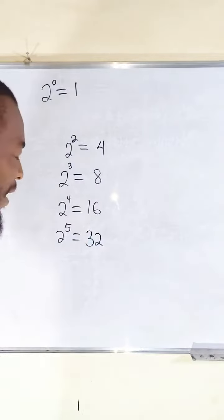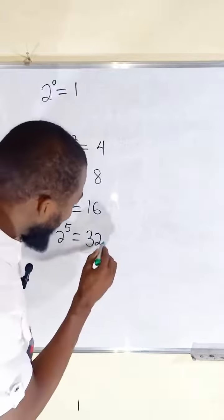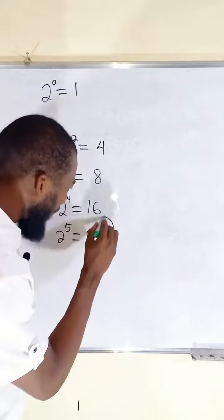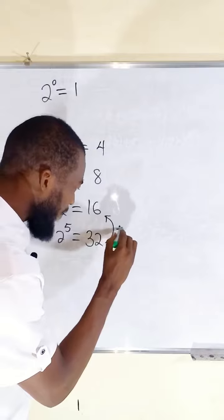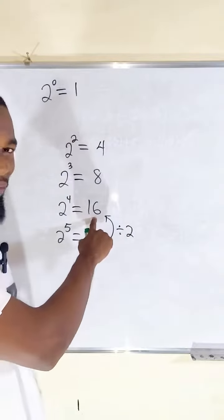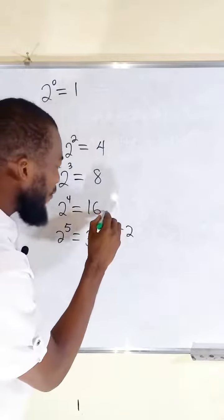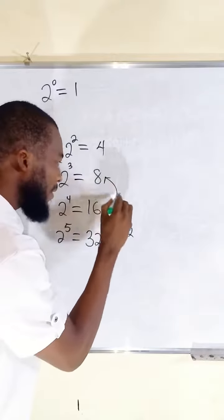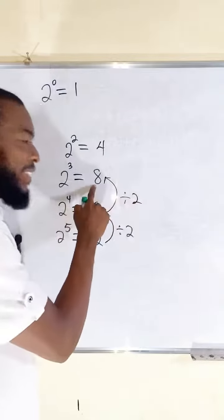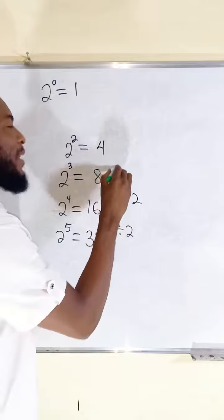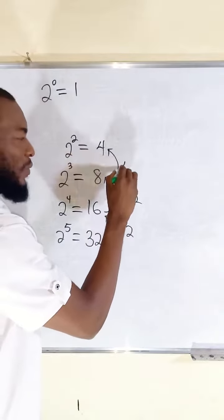What do you observe here? If I divide 32 by 2, it gives me 16. If I divide 16 by 2, it gives us 8. Divide 8 by 2, it gives us 4.